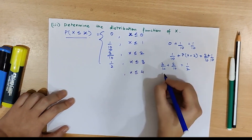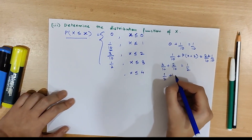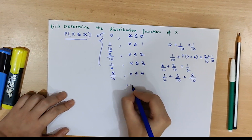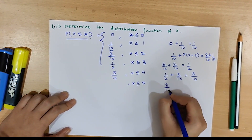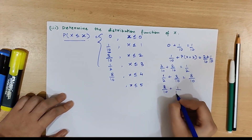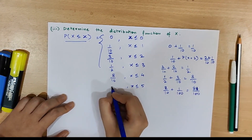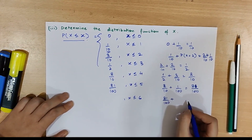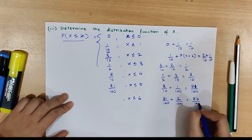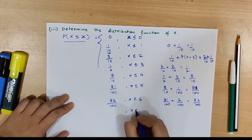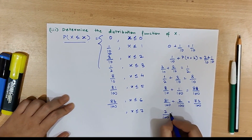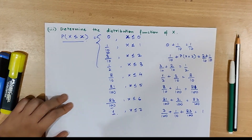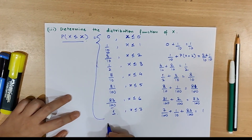For x ≤ 4, we have 1/2 + P(x = 4) = 3/10, so 8/10. For x ≤ 5, we have 8/10 + P(x = 5) = 1/100, giving 81/100. For x ≤ 6, we have 81/100 + P(x = 6) = 2/100, giving 83/100. For x ≤ 7, we have 83/100 + 7/100 which equals 1. This completes our distribution function of x.